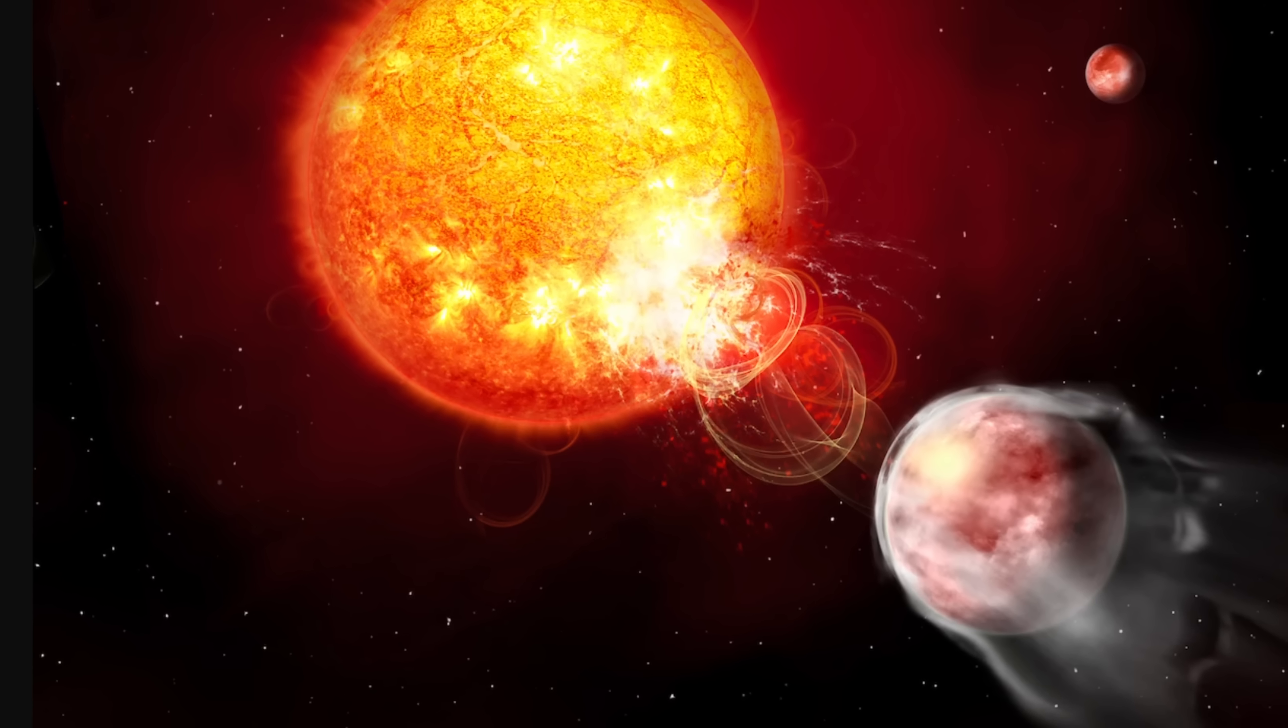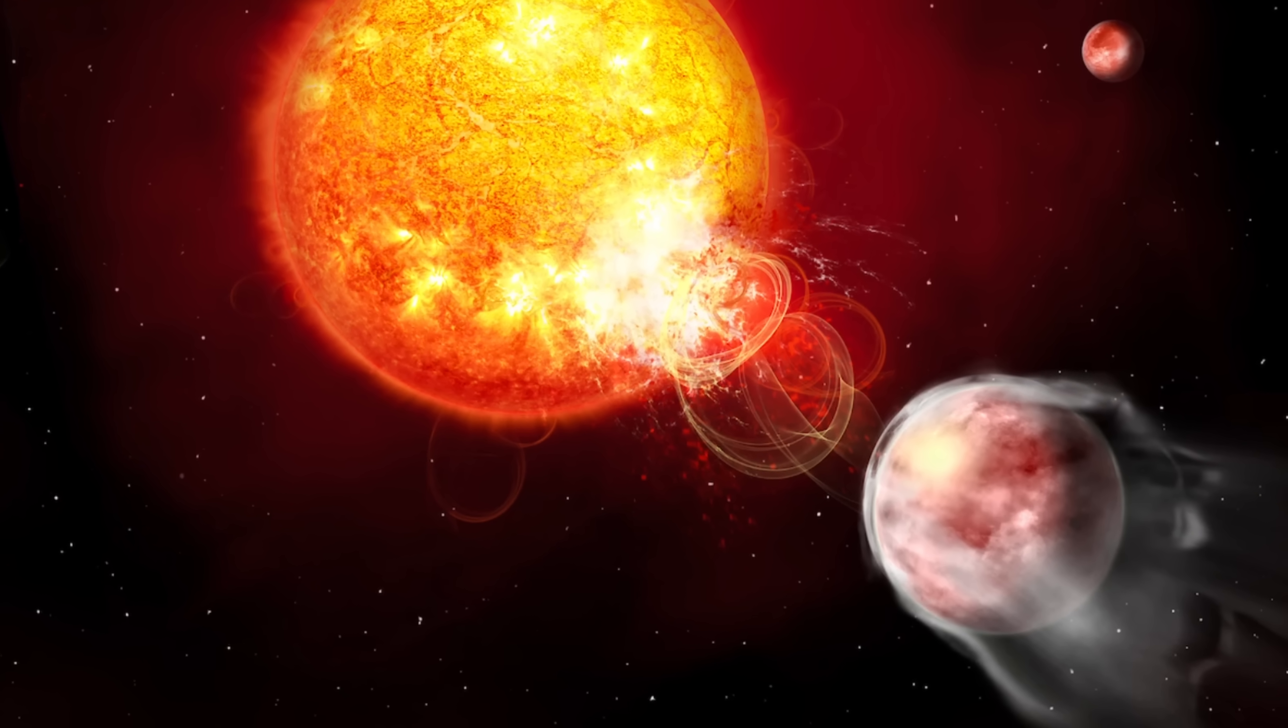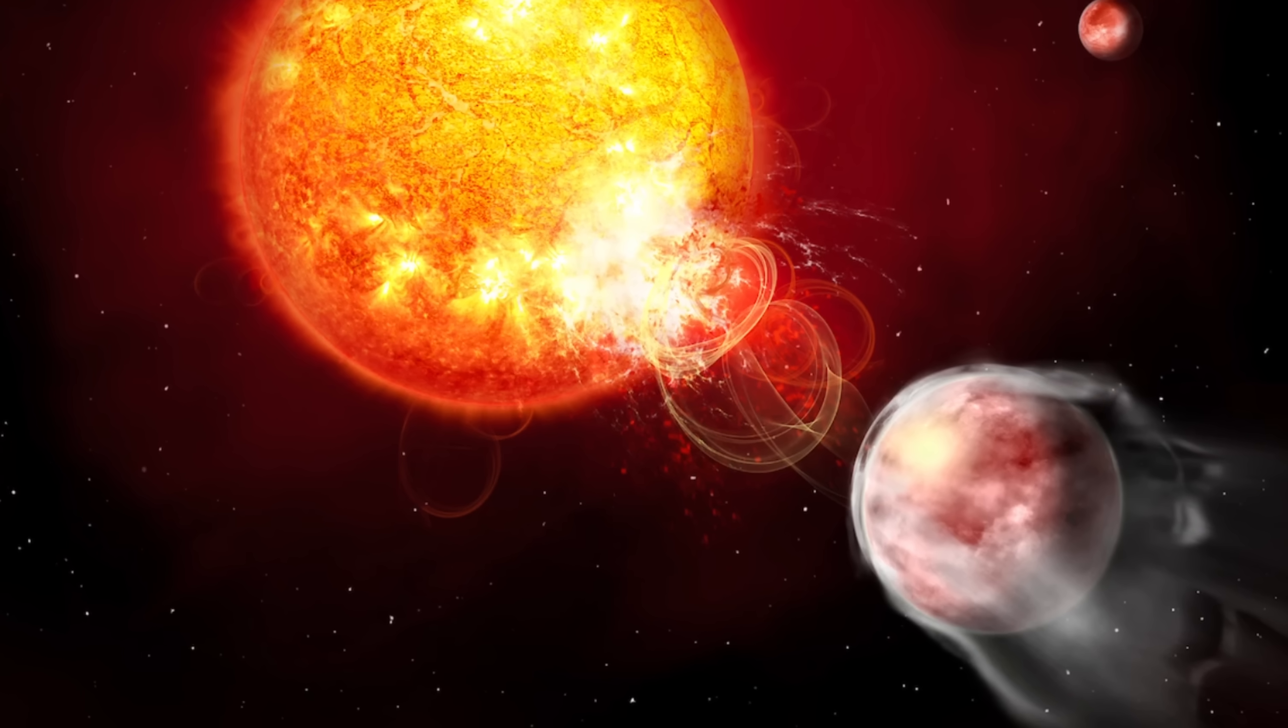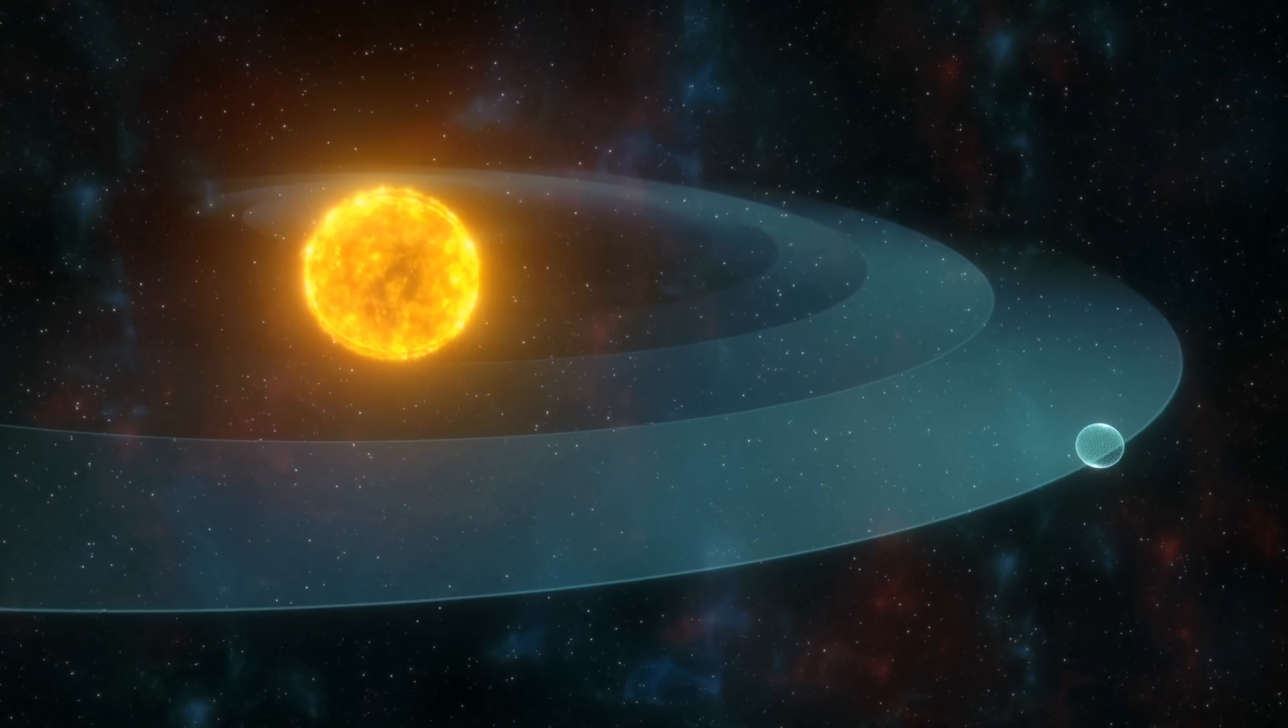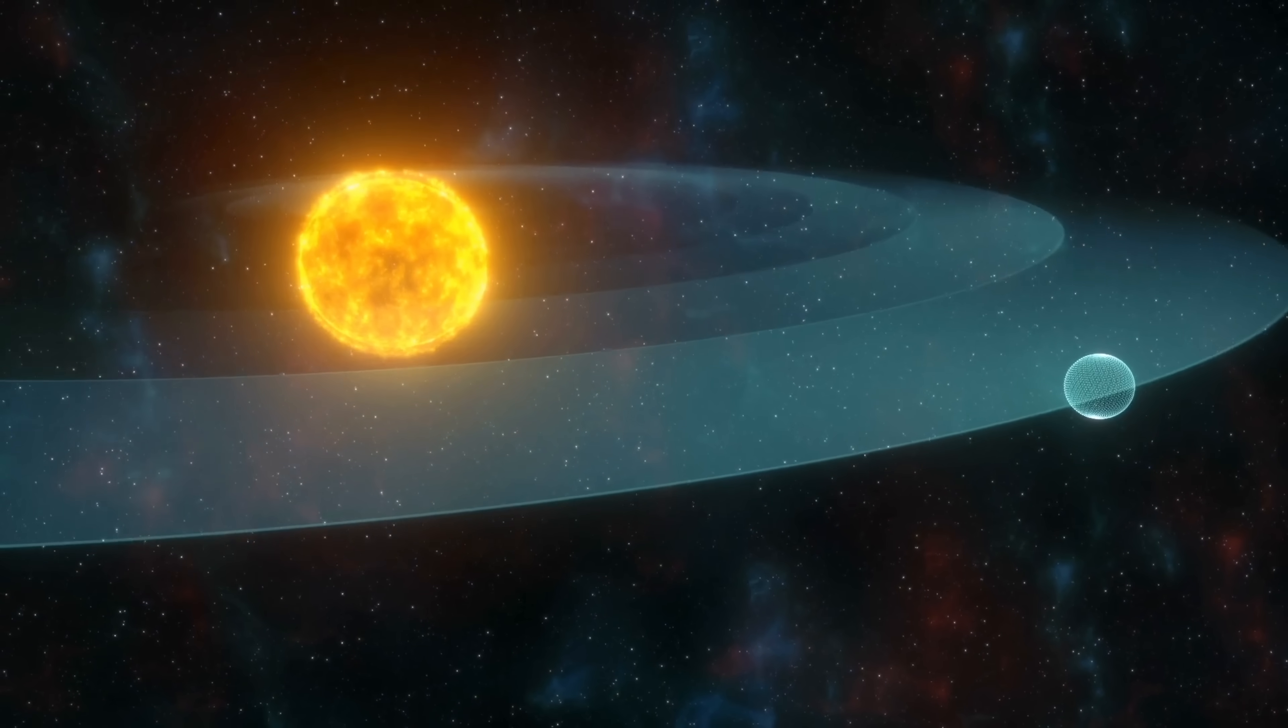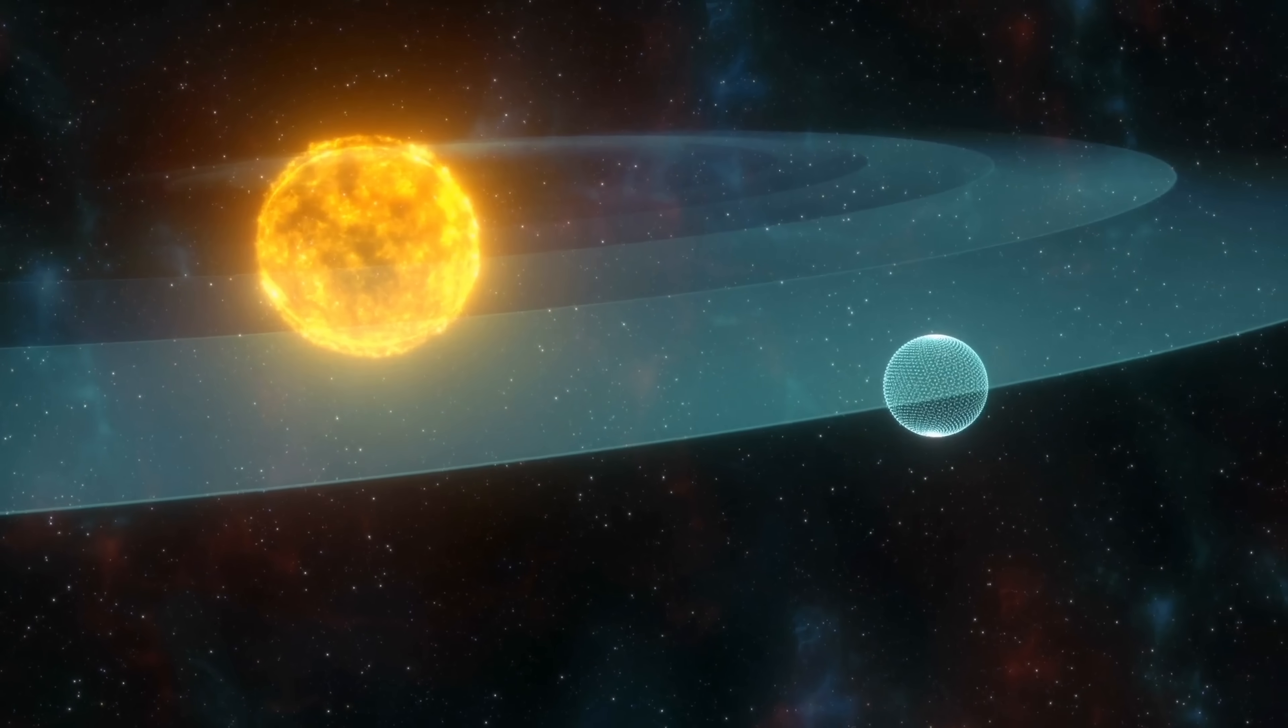For example, the super puffy planets or the extreme examples known as the cotton candy planets might have formed in a very similar way. Because in many cases these planets are also extremely close to the star, it's possible that this is exactly how they were formed too - they triggered the flares from the star which then caused the atmosphere to expand dramatically and make the planet very puffy.